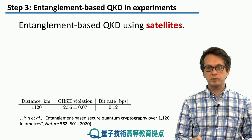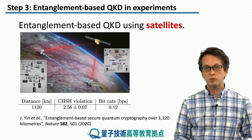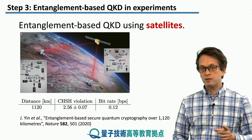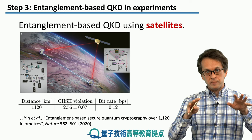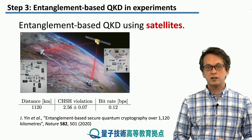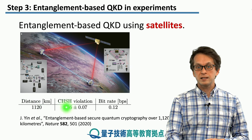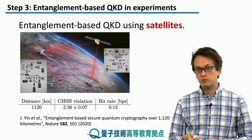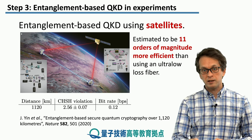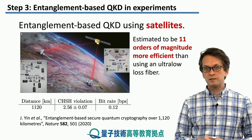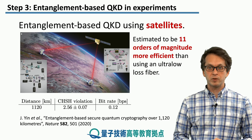Another remarkable experiment used satellites, where the satellite distributed entangled pairs between two ground stations 1,120 kilometers apart. Since light travels in a straight line, a satellite overcomes the complication of Earth's curved surface to establish quantum keys over much longer distances. The total distance was over 1,000 kilometers, the measured CHSH violation was 2.56, and the obtained bit rate was 0.12 bits per second. The paper estimated that using fiber to connect the same ground stations would have been around 11 orders of magnitude less efficient than using satellites — quite incredible.